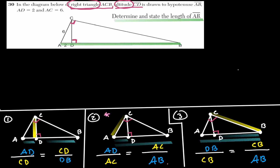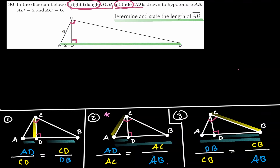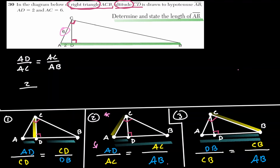Scenario 2 is the best to use here because AC is given, AD is given, and AB is what we're looking for. Setting up the proportion: AD/AC = AC/AB, where AD = 2 and AC = 6.